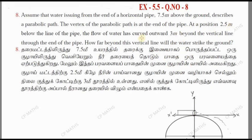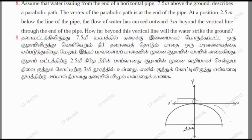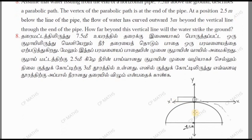At a position of 2.5 meters below the line of the pipe, the flow of water curves outward 3 meters. So 2.5 meters below the line of the pipe, the curve is 3 meters. The x value is 3 meters and the y value is minus 2.5 meters. This particular point lies 2.5 meters below the line of the pipe, where the water curves.